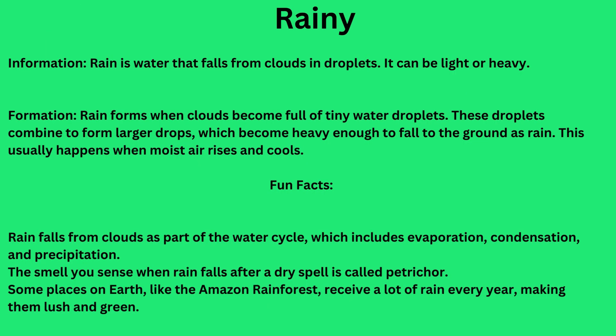Rainy. Rain is water that falls from clouds as droplets. It can be light or heavy. Rain forms when clouds become full of tiny water droplets. These droplets combine to form larger drops, which become heavy enough to fall to the ground as rain. This usually happens when moist air rises and cools.